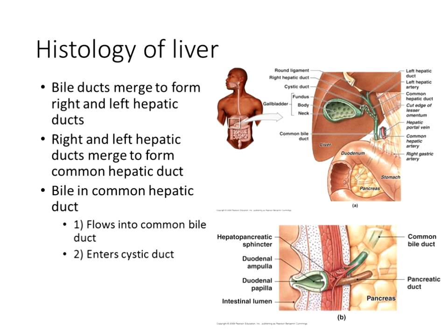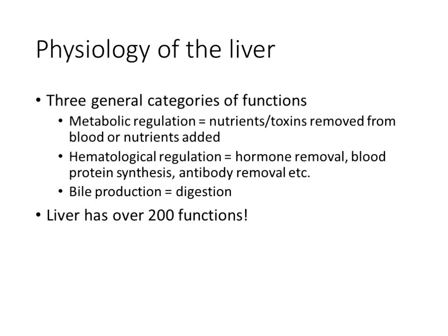The left and right hepatic ducts form the common hepatic duct, which takes secretions either toward the common bile duct or into storage in the gallbladder via a U-turn through the cystic duct. The right and left hepatic ducts, the common hepatic duct, and the common bile duct are all one-way streets. Only the cystic duct is a two-way street — it can bring secretions into and out of the gallbladder.